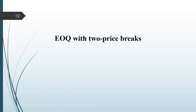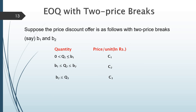Now let us have the EOQ model with two price breaks. The price discount offer is as follows: if you purchase Q1 units falling between 0 and B1, they are available at price C1; if Q2 falls between B1 and B2, the purchase price is C2; and if Q3 is more than B2, those units are available at price C3, with C1 > C2 > C3. So we have incremental discounts: Q1 units at C1, Q2 units at C2, and Q3 units at the discounted price C3.